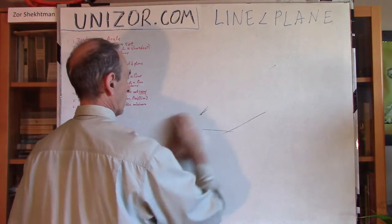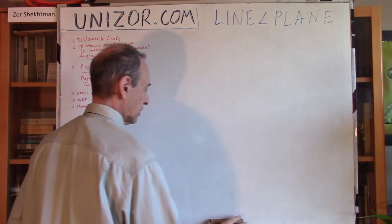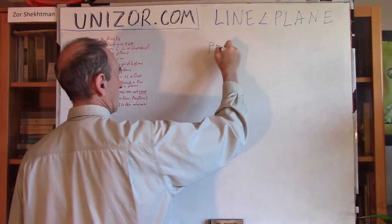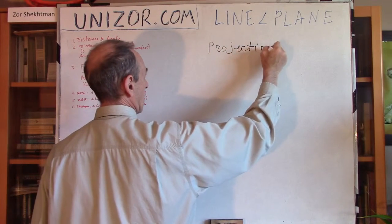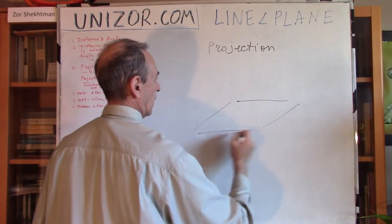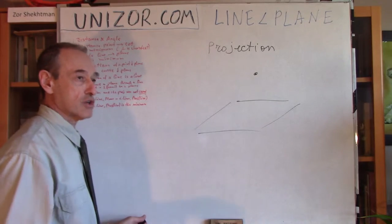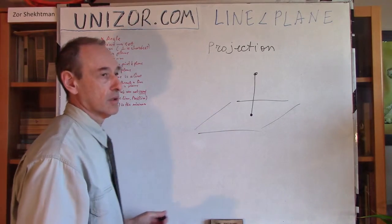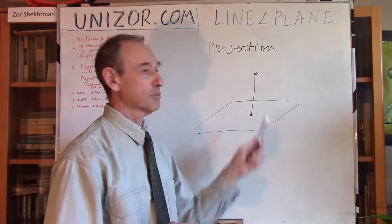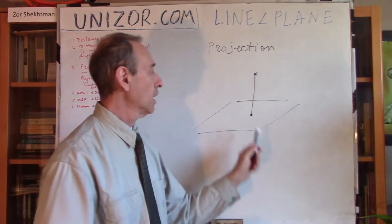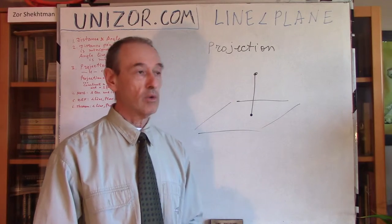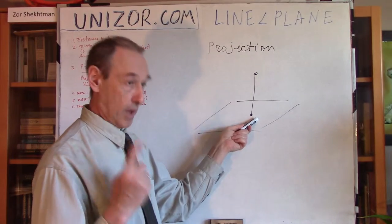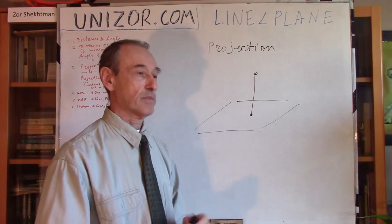How am I going to achieve it? First, let me introduce a very simple concept: a concept of projection. If I have a plane and a point outside, the projection of the point onto the plane is the base of the perpendicular which I drop from this point to the plane. The perpendicular is one and only — we talked about this before — which means that the base point is also one and only. So for any point outside of the plane, the projection is one and only one point, which is the base of the perpendicular.